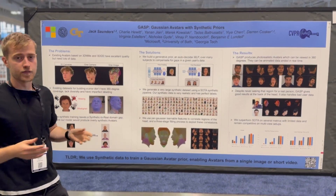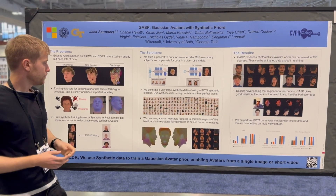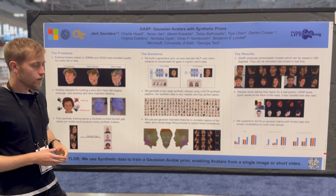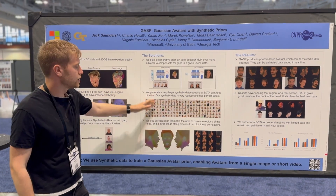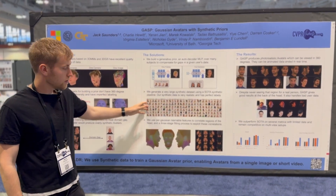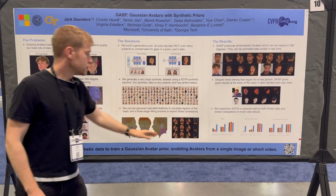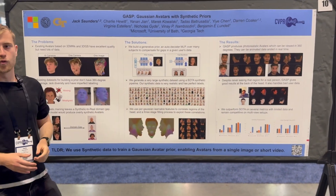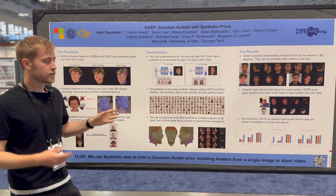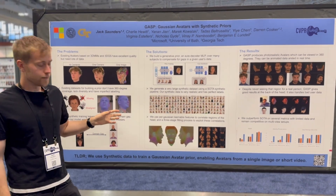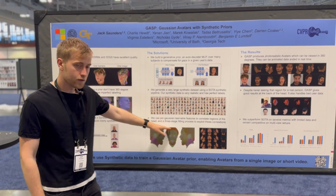We have almost infinite data — it's perfectly labeled and very accurate — but the issue is if we try to fit the latent vector here, we're just going to end up with a synthetic avatar, which is kind of what this one here is doing. So instead, we need to come up with a way of getting somewhat more photorealistic results out of our synthetic prior.